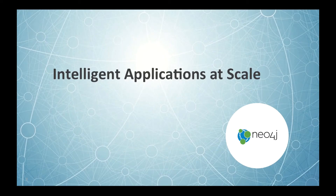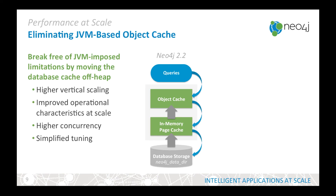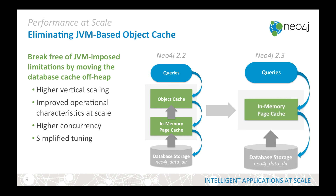Neo4j 2.3 is about improving the performance of your applications so that they can scale better. In order to do this, we've moved the database cache off heap, resulting in higher vertical scaling, improved operational characteristics, higher concurrency, and simplified tuning of your database.